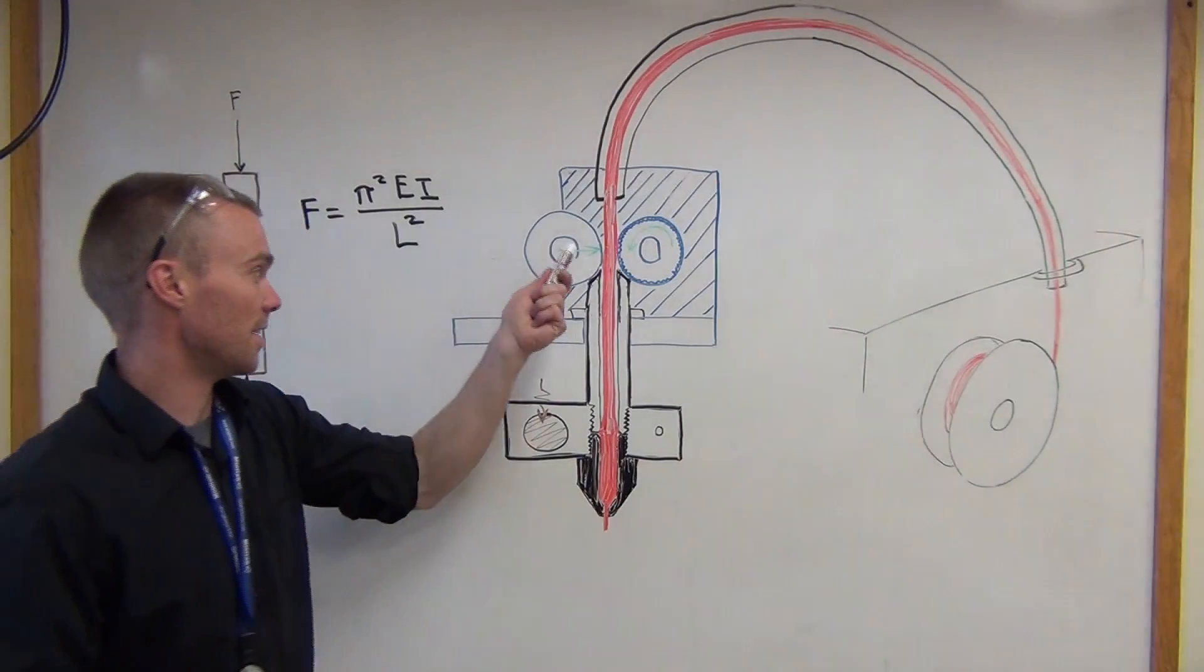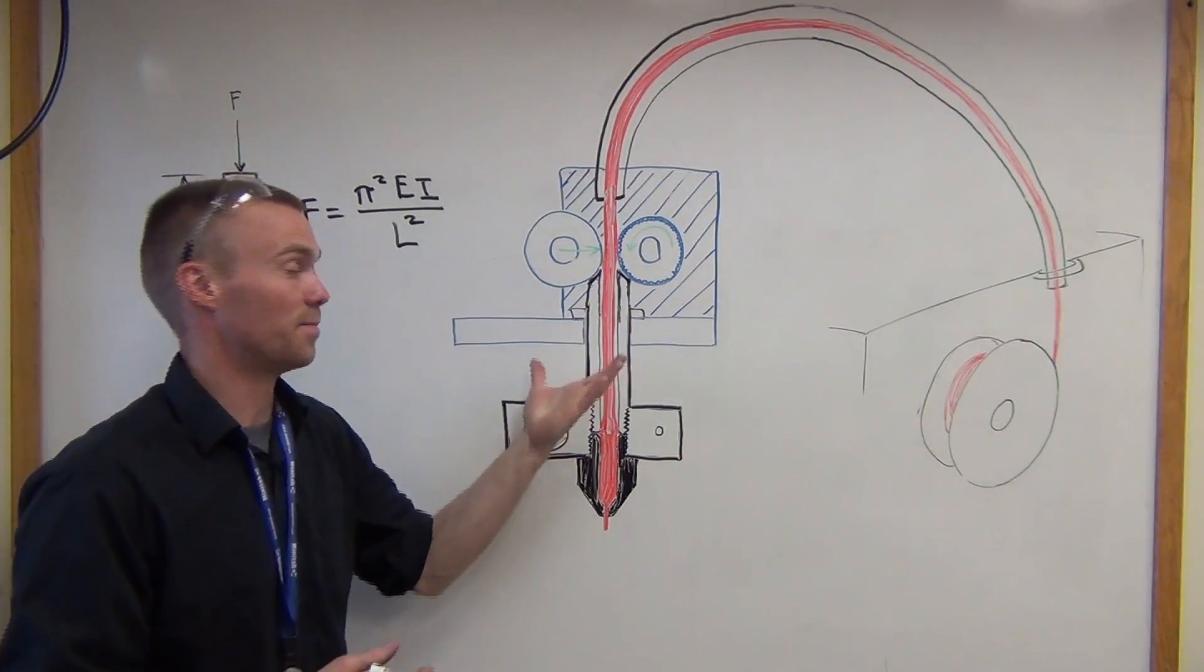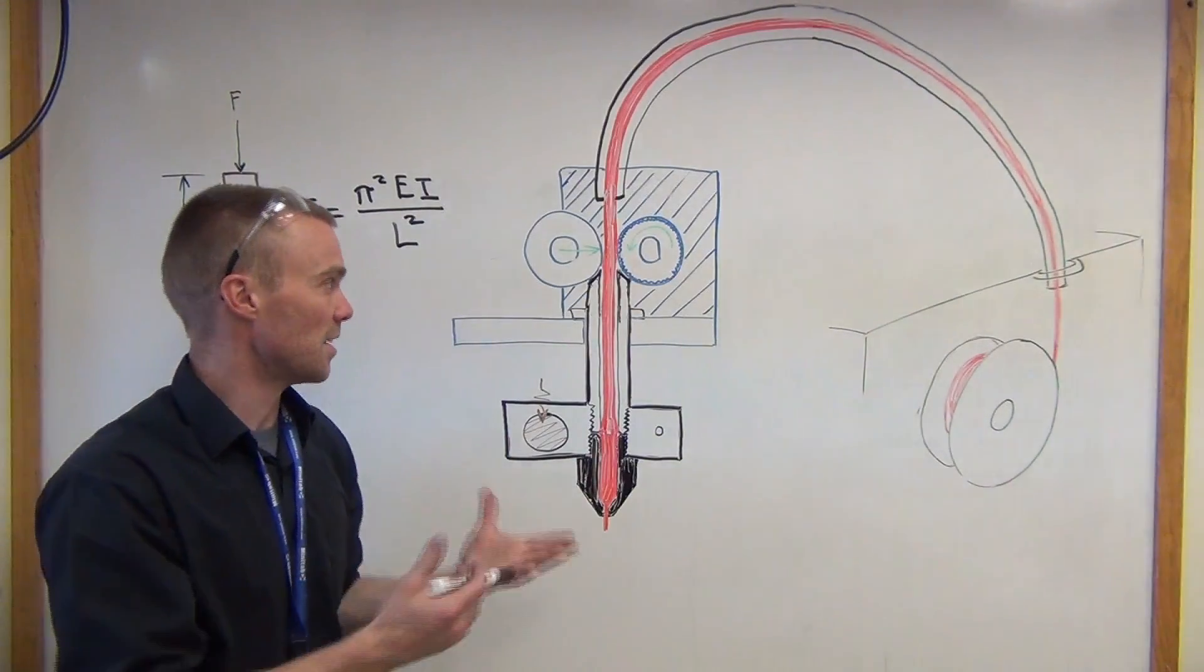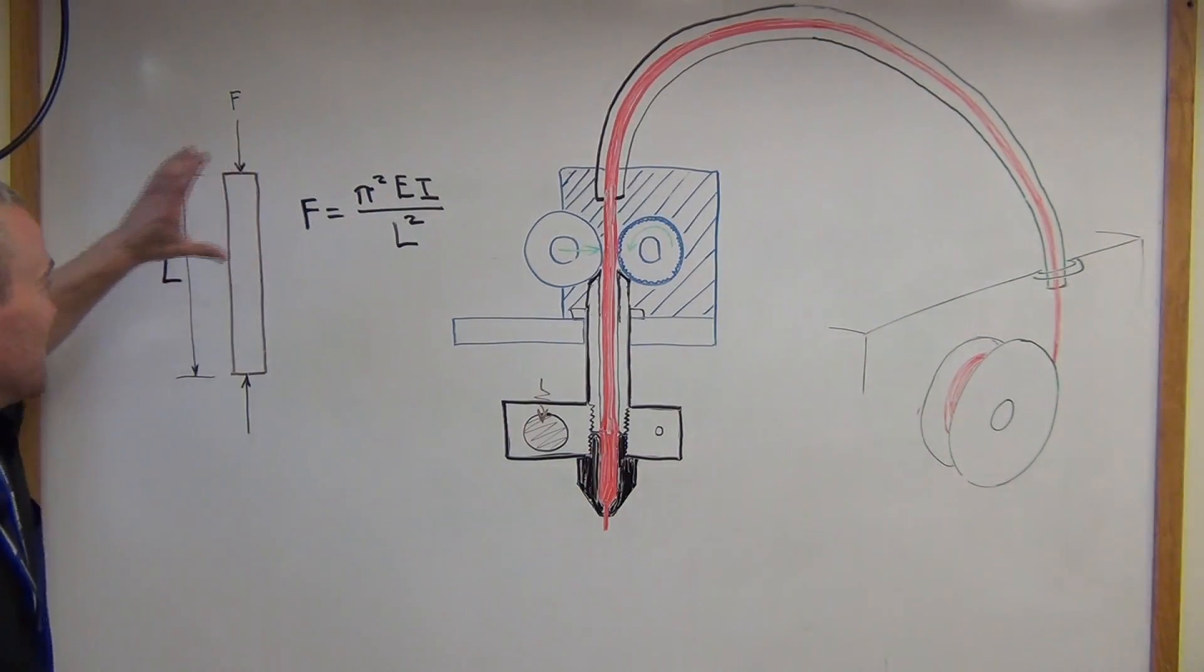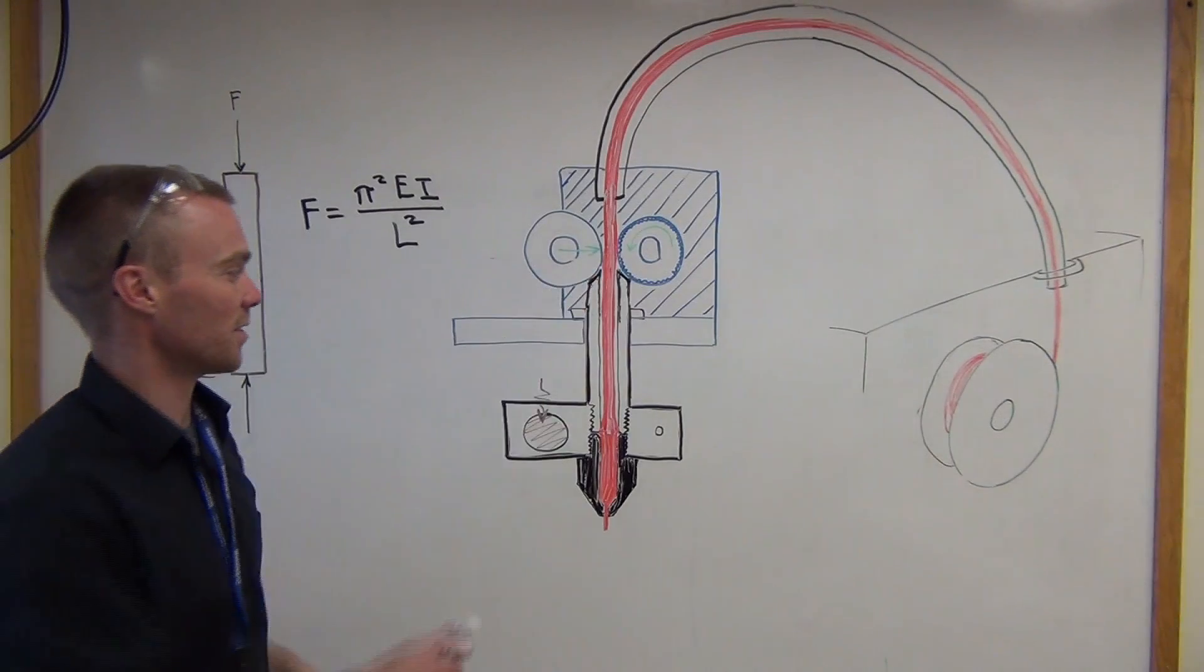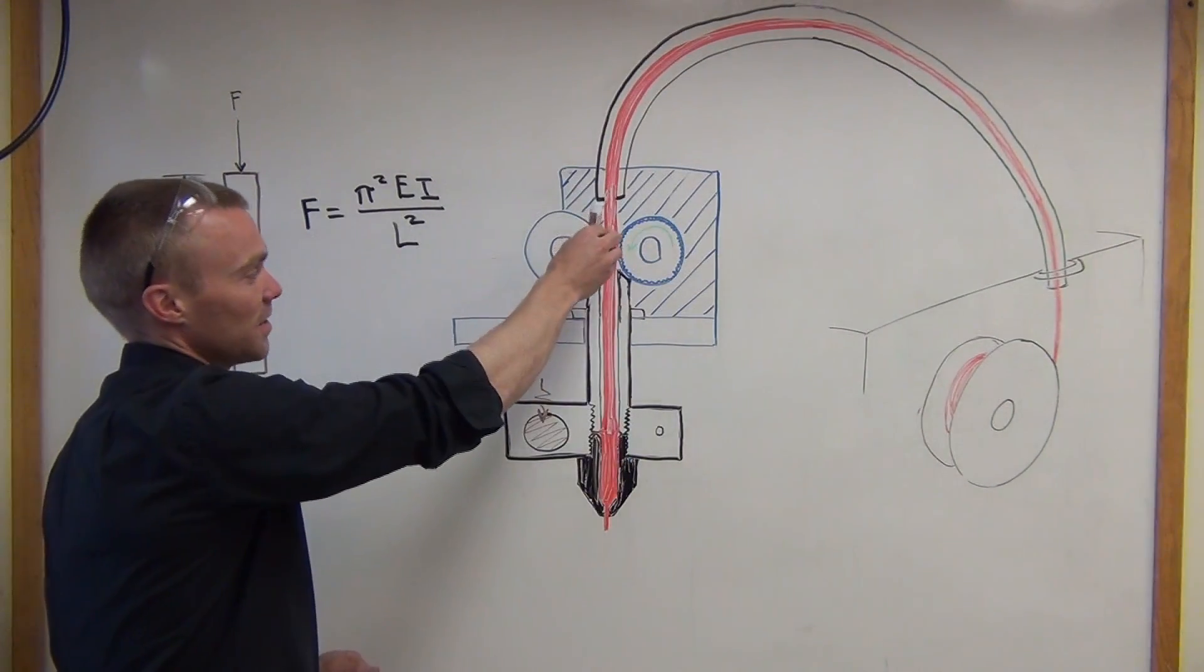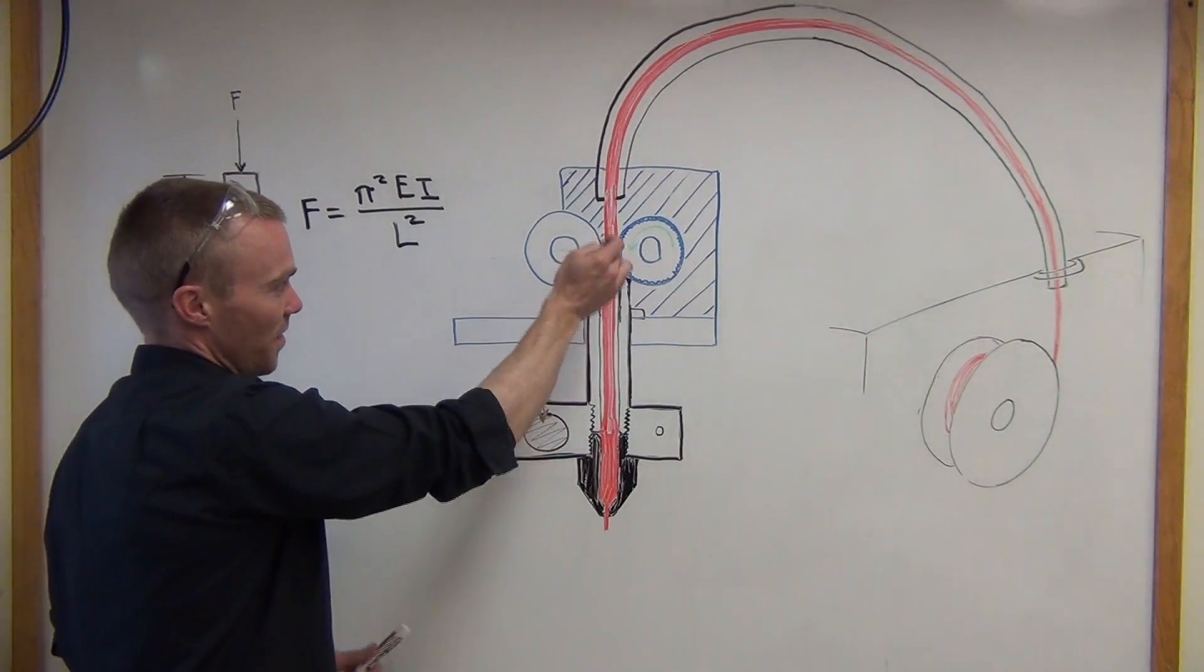The modulus of thermoplastics drops significantly as temperature increases, which means this unsupported length comes more and more critical. If your extruder is a compact design and you retract a long distance, then that hotter material is going to be less tolerant of a gap in this region and can cause issues.